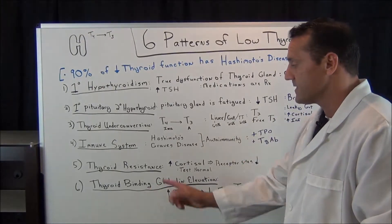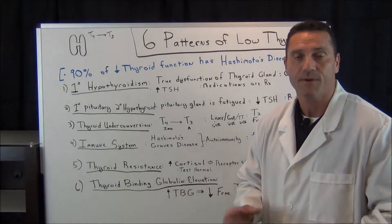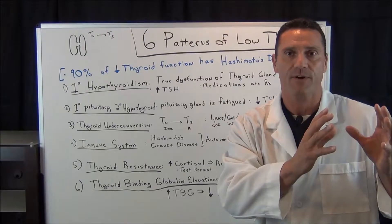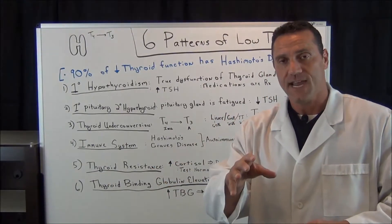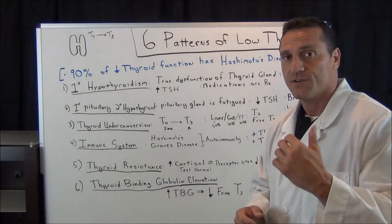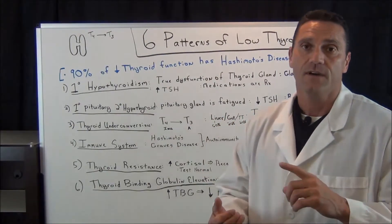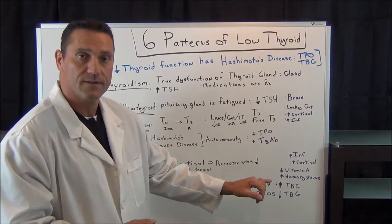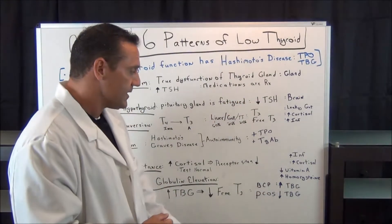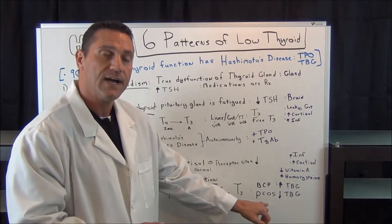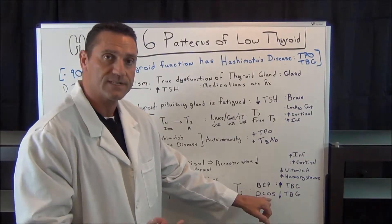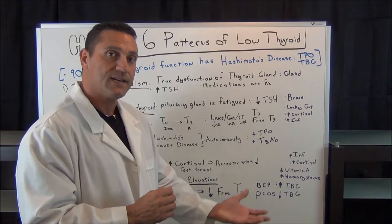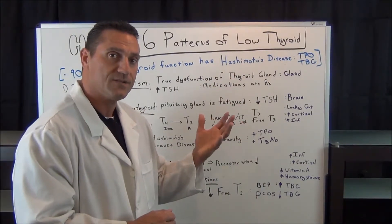The sixth pattern is thyroid binding globulin elevation. Thyroid binding globulin is a protein — like a taxicab — that transports thyroid hormone throughout the body. However, it's also utilized by estrogen. For females who have taken birth control pills, they may have too much thyroid binding globulin, resulting in decreased thyroid function. Alternatively, those with PCOS (polycystic ovarian syndrome) will have decreased binding globulin hormones, leading to elevated active T3 throughout their system.